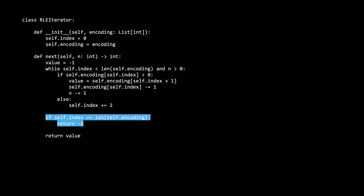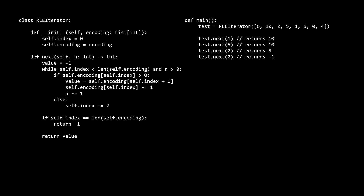Finally, if it is ever the case that our index has gone past the last valid pair — in other words, it is equal to the length of the encoding array — it means that we have run out of elements in the sequence to iterate over, so we return negative 1. Let's go through an example test run to double-check we understand how the code is working.